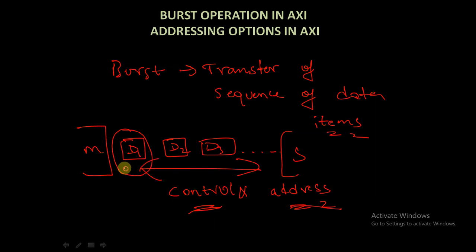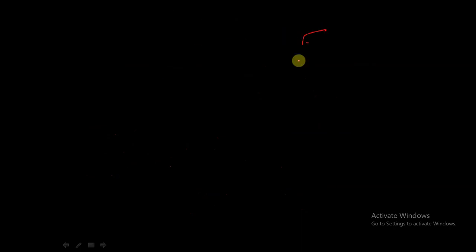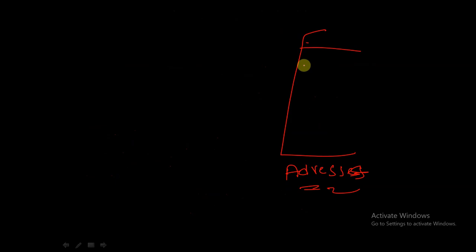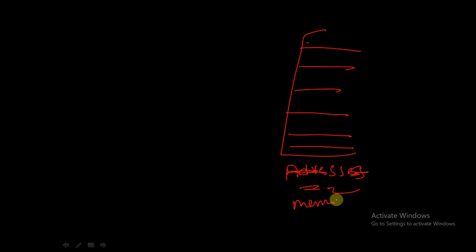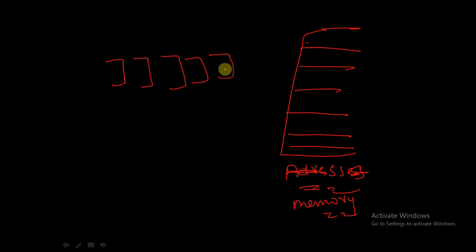These data items are stored in different locations in memory. There are different locations in this memory, and the data items which are sent in the form of a burst from the master to the slave — say data items D1, D2, D3, D4 — are each stored at separate locations.